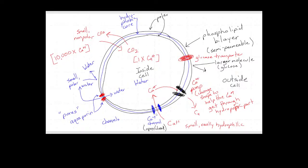Inside and outside the cell both have water. Water is a polar molecule, so it's not going to be happy going through the hydrophobic core of the membrane — it will bounce off. What we need is a hole, or pore, in the membrane so that water can travel through. This pore is made of proteins and is called an aquaporin — the specific pore that allows water to go through. 'Aquaporin' literally means 'water pore,' so it's easy to remember. In addition to being called pores, they can also be called channels.